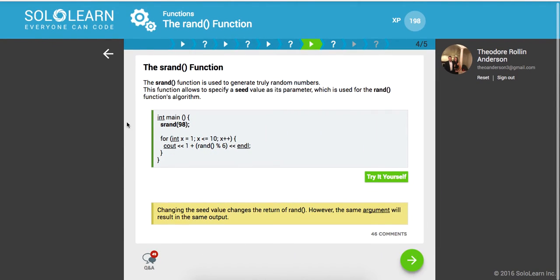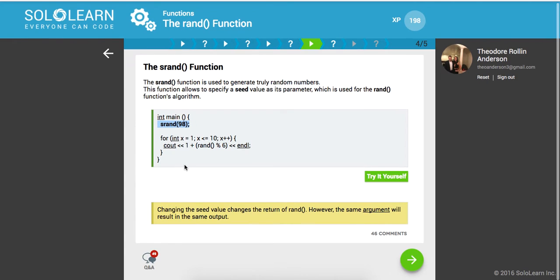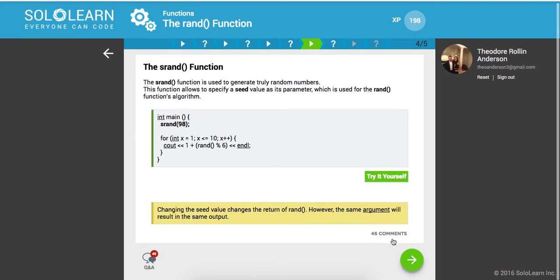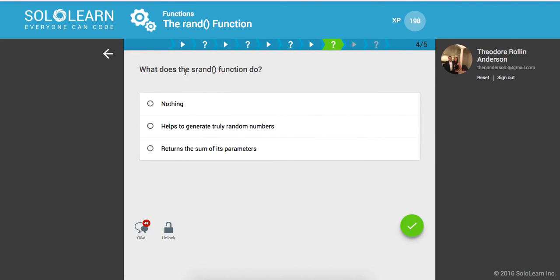And the sRAND function is used to generate truly random numbers. This function allows you to specify a seed value as its parameter, which is used for the RAND function's algorithm. So here we have our main method, and we call sRAND 98. Changing the seed value changes the return of random. However, the same argument will result in the same output. So what does the sRAND function do? It helps to generate truly random numbers.